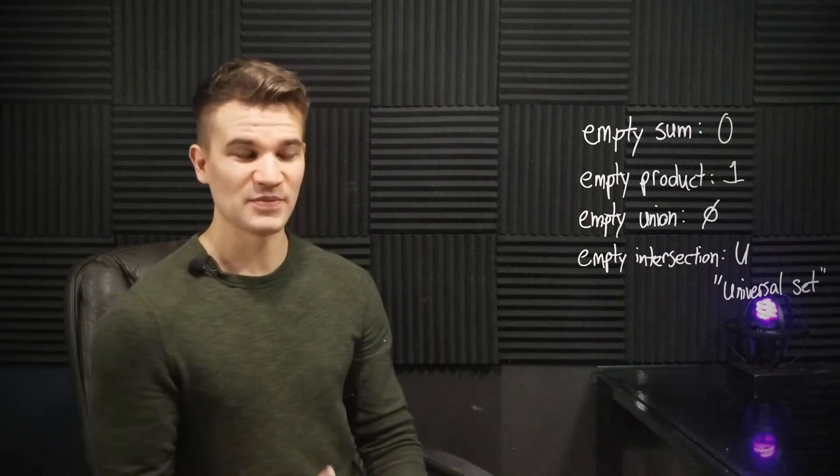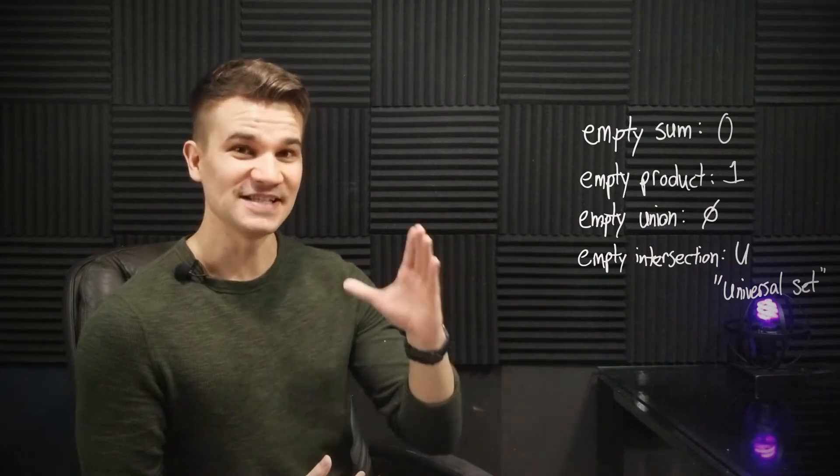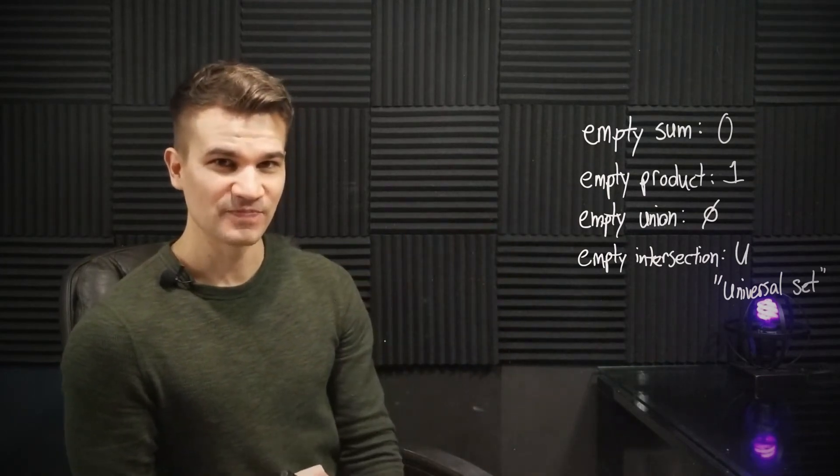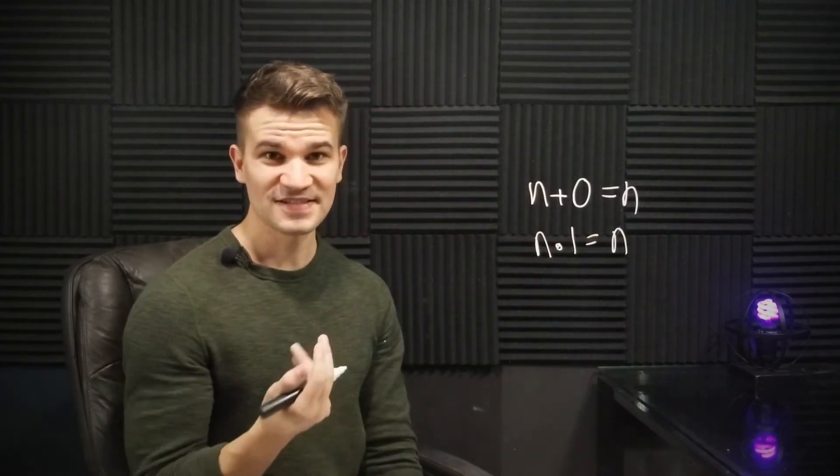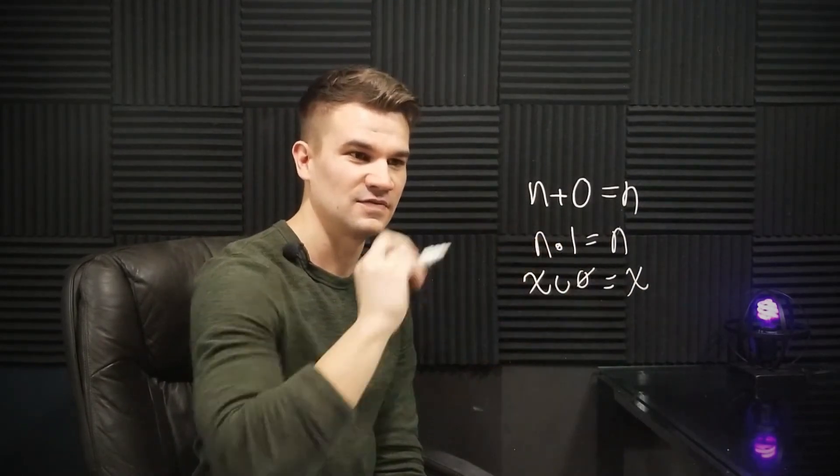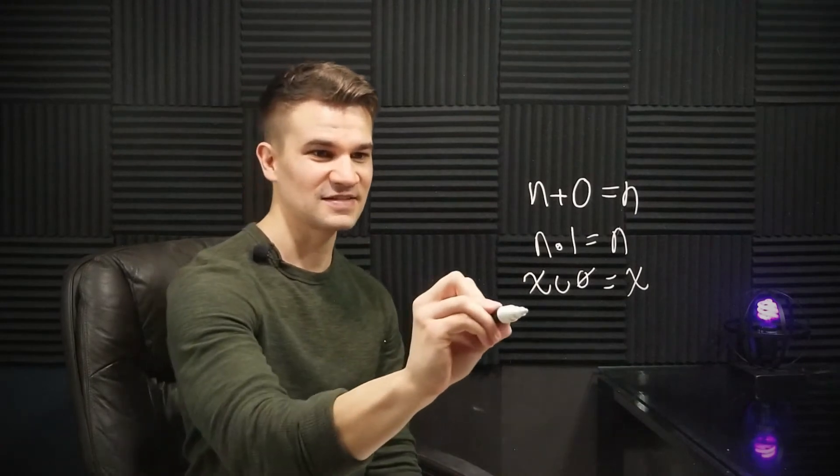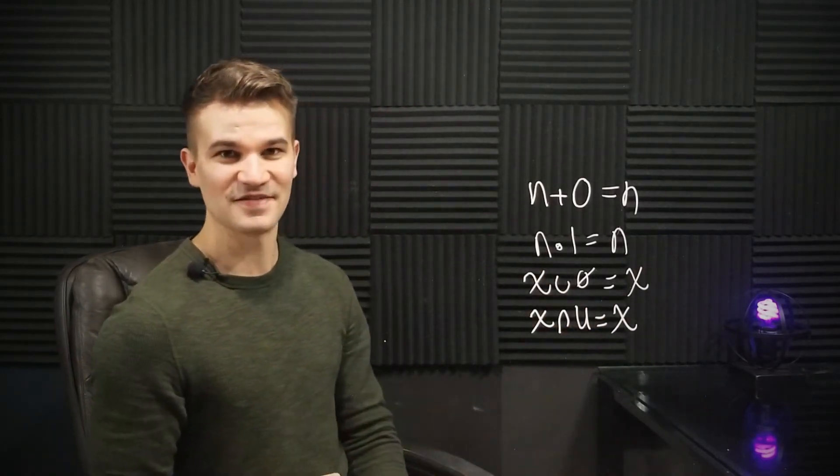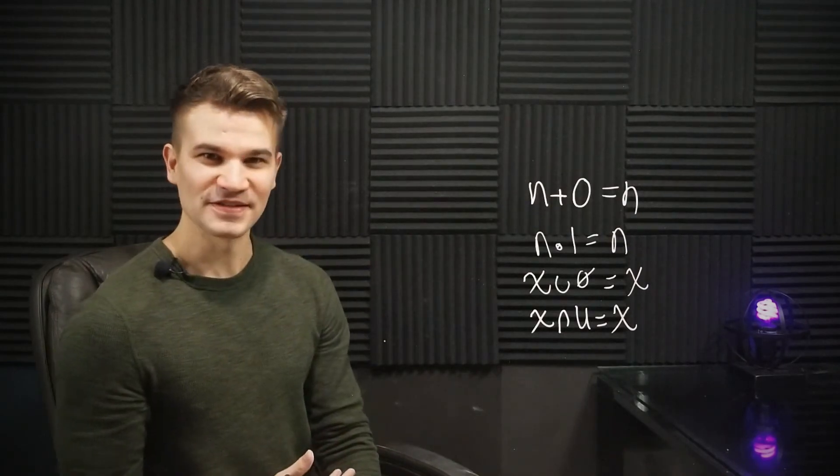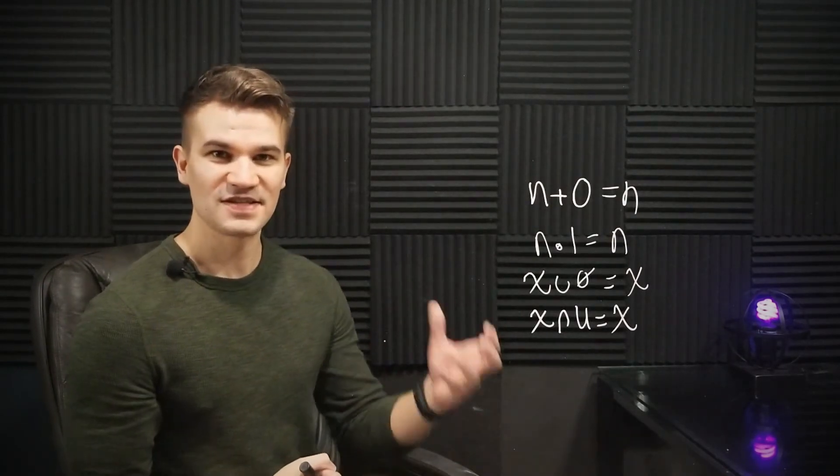The overall trend that we have is that each of these results is the identity of the respective operation. n plus zero is n. n times one is n. If you take a set X and you union it with the empty set, you just have the set again. And if you take a set X and it's a subset of U and you intersect it with U, you get X again. It's the identity of the operation that we're considering at the time. So why is this happening? Why are the empty operations giving us the identity each time?